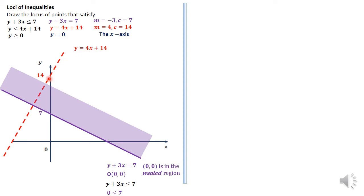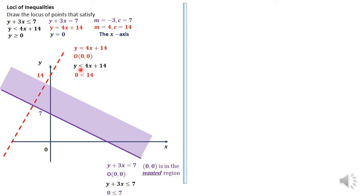For the next line, y equals 4x plus 14, I've drawn it as a broken line because the inequality is strictly less than — a strict inequality requires a dashed line. Testing with the origin again: substituting x equals zero and y equals zero gives zero is less than 14, which is mathematically sensible. So the origin is in the wanted region, and we shade away the other side of that line.